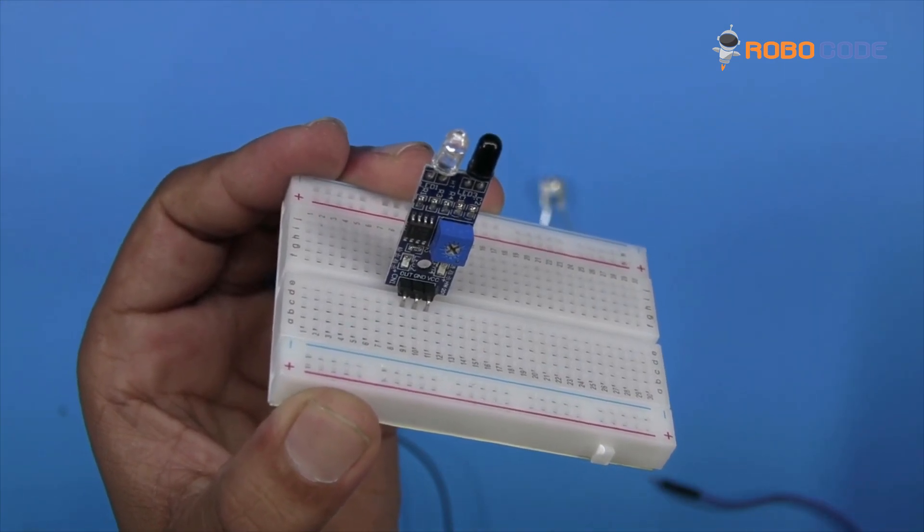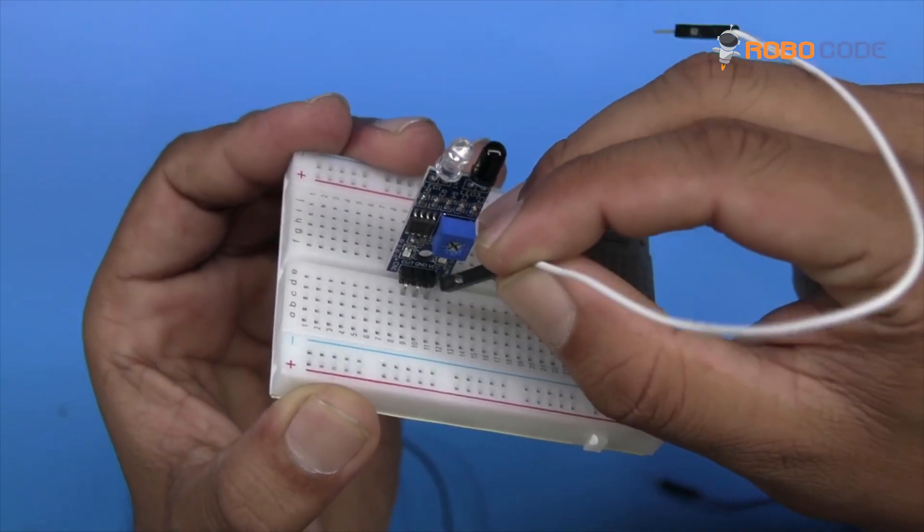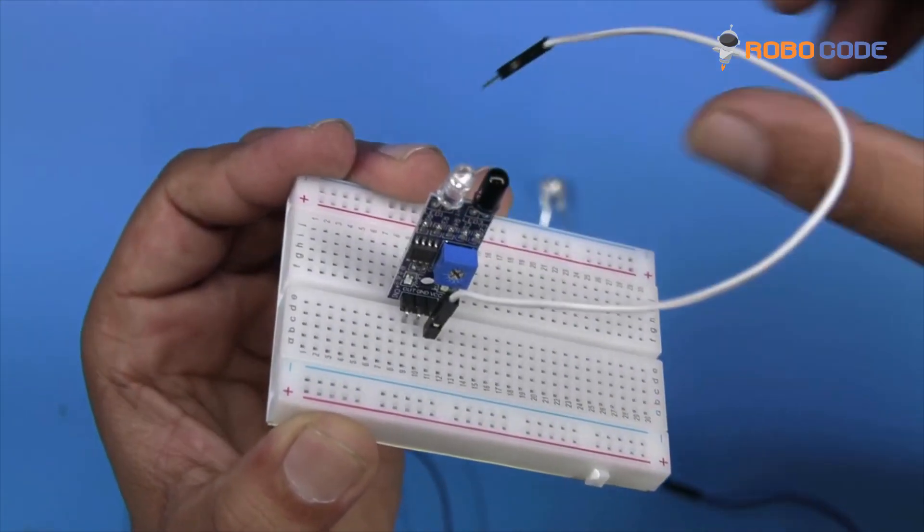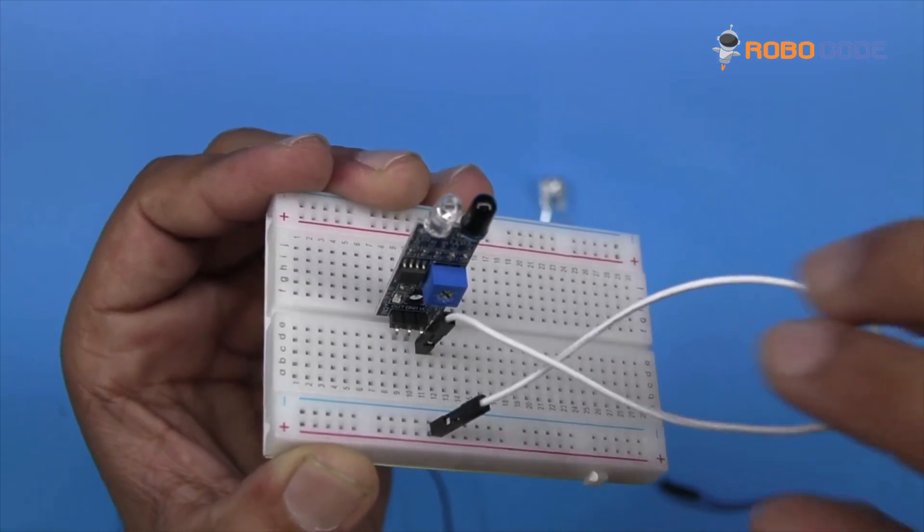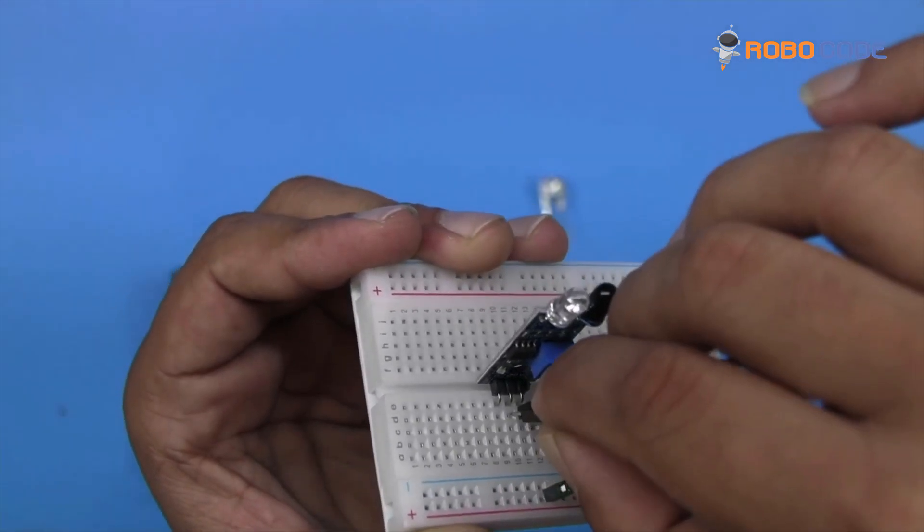take the male jumper wire and insert it on the third pin, and insert the other side into the breadboard.